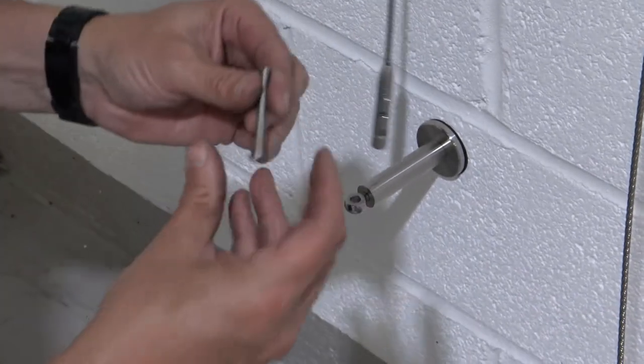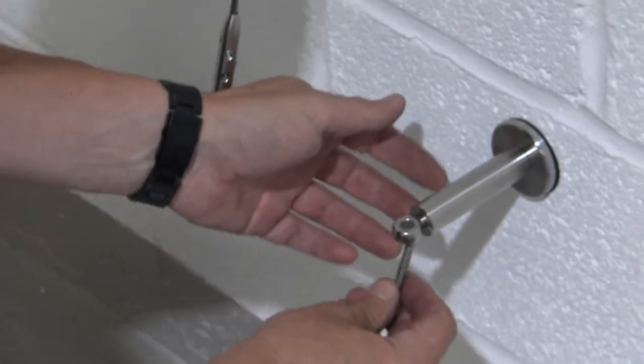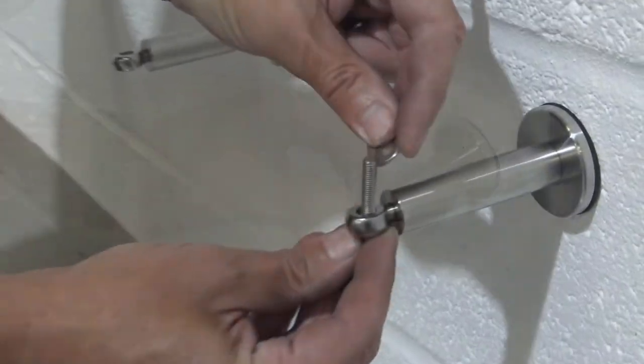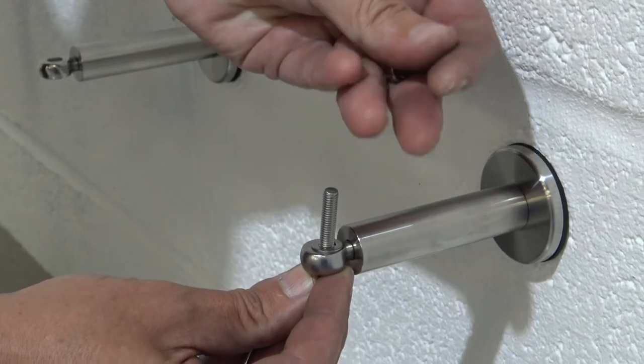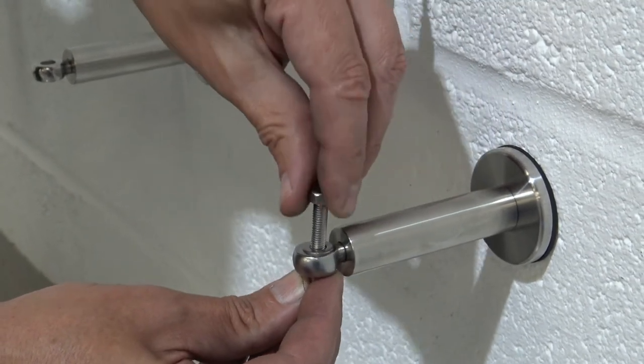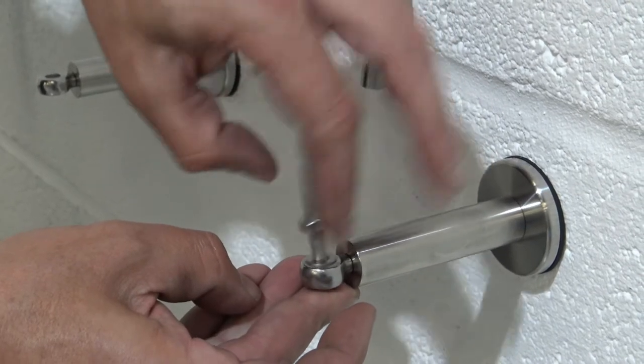Tensioning is achieved using the M6 bolt supplied. The nut acts as a lock nut once the tensioning is achieved.